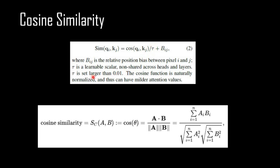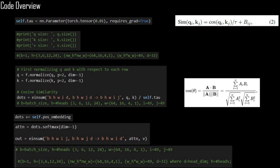Tau is a very small number because in cosine similarity, after dividing by the length of A and length of B, the value is smaller than in dot product similarity. Dividing by a small tau compensates for that. Tau is set larger than 0.01; for this code I just initialized it at 0.01, but you could add a constraint to ensure it stays always greater than 0.01.